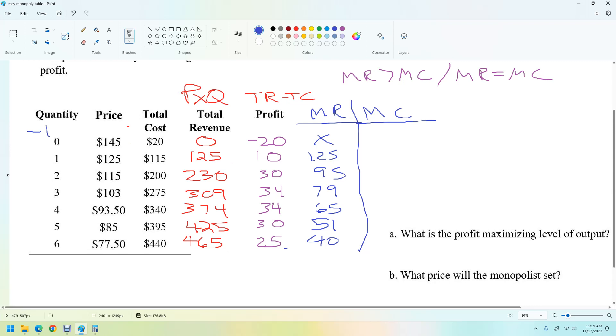All right. So now we've got, we just look at the change in total cost. This is the change in total revenue. OK, so we don't have anything there.